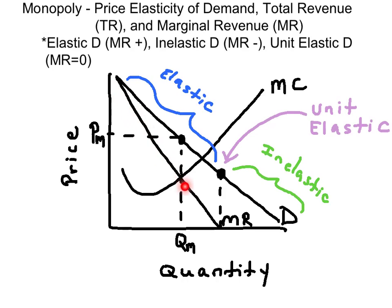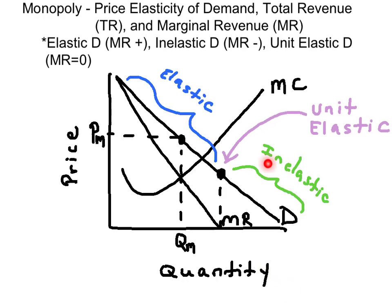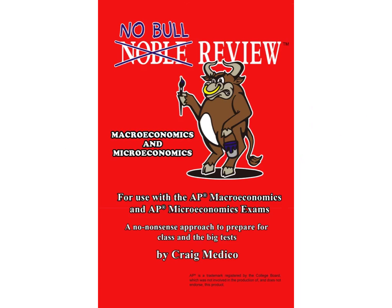In summing up, remember: when marginal revenue is positive, the price elasticity of demand is greater than 1 — it's elastic. When marginal revenue is 0, the demand curve is unitary elastic. And when marginal revenue becomes negative, the price elasticity of demand is less than 1, or inelastic. Thank you for watching another Noble Review Session.